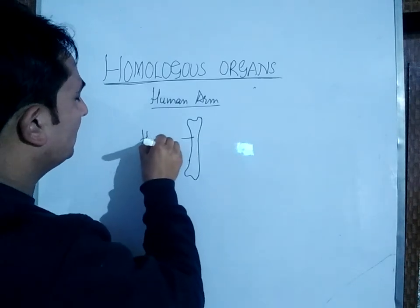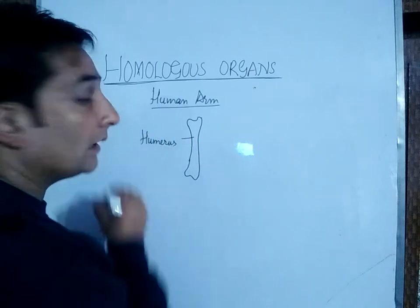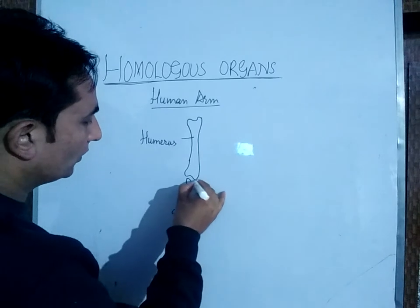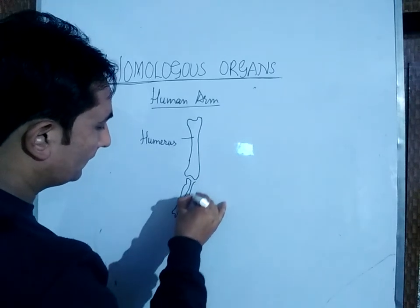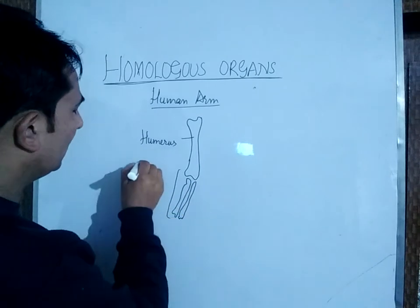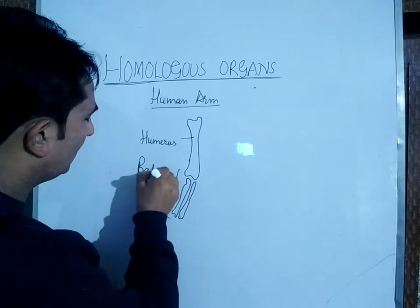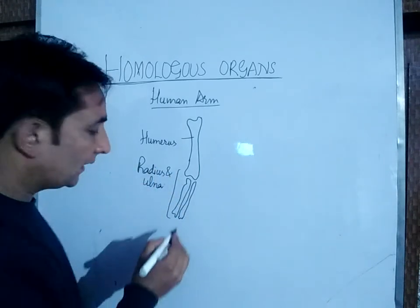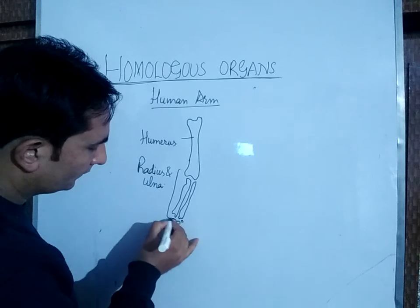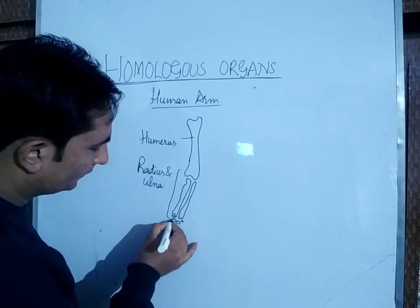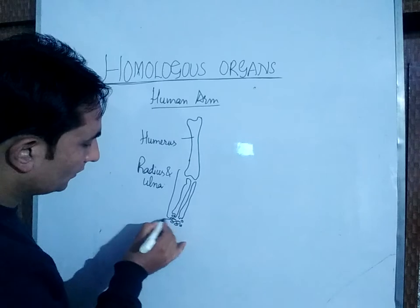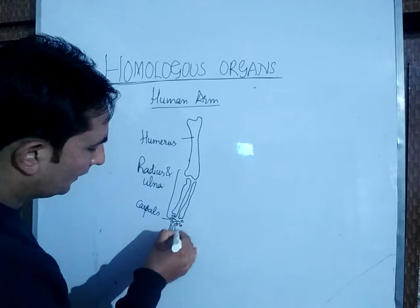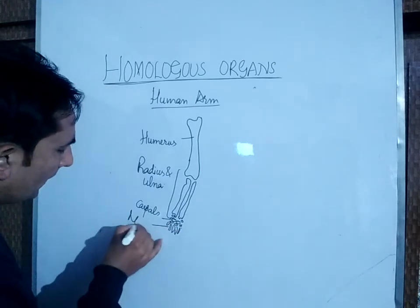Then there are two bones — these are the radius and ulna. Then there are these small bones; we call them carpals. Then there are metacarpals.